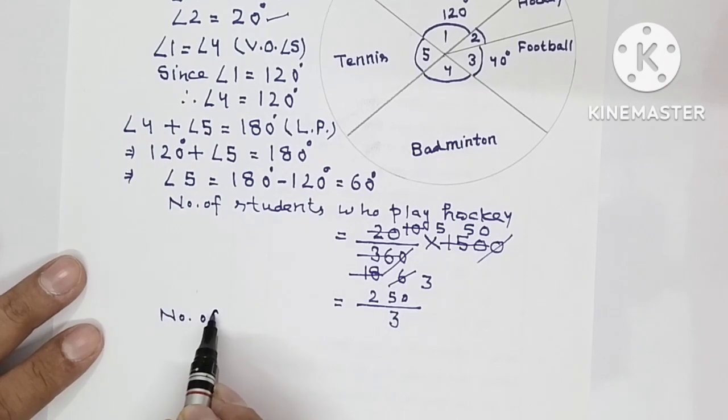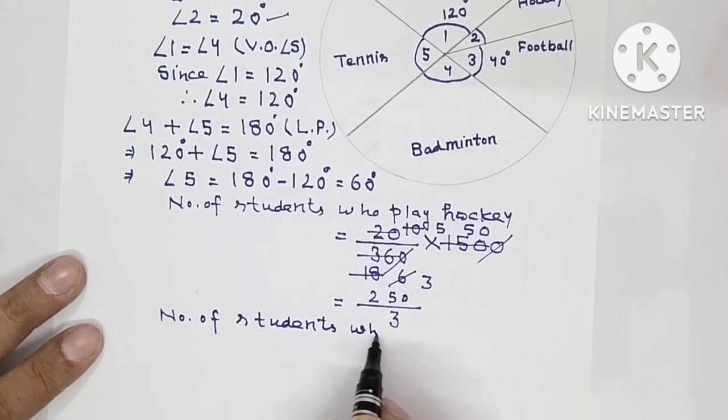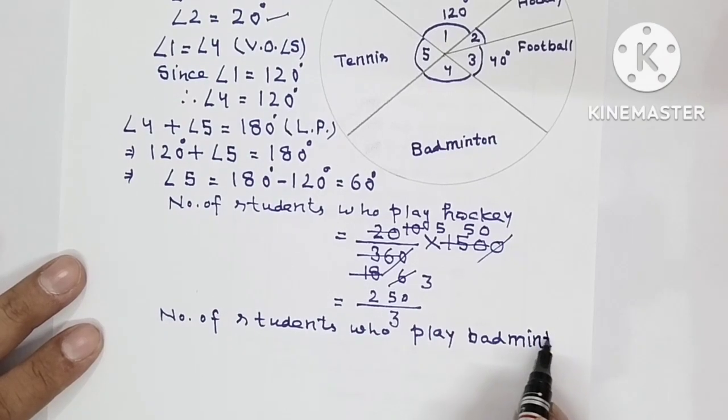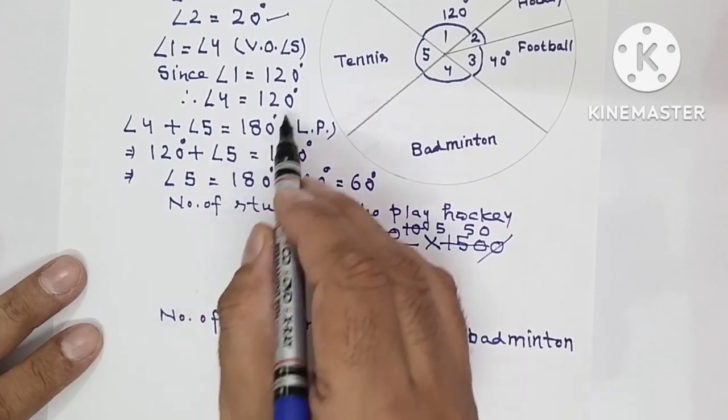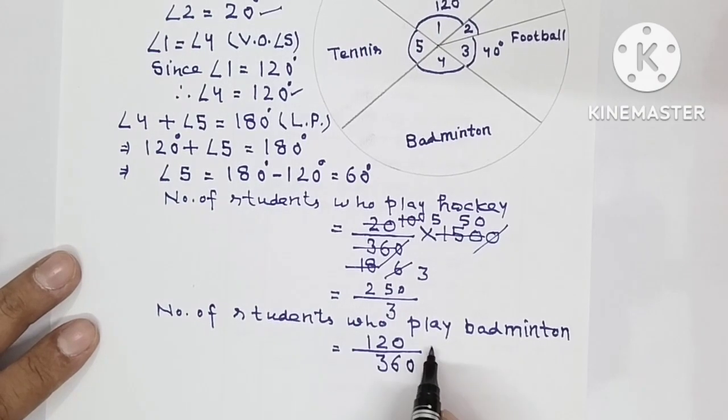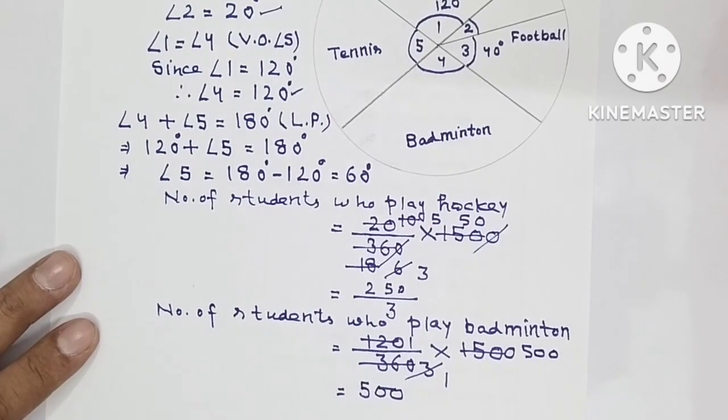Now you have to find number of students who play badminton. So see badminton's angle, how much is it? It is angle four. And angle four is 120. So 120 upon 360 into 1500. So 120 ones are 120, three zero, three ones are three, five zero, fifteen zero zero. 500 students who play badminton.